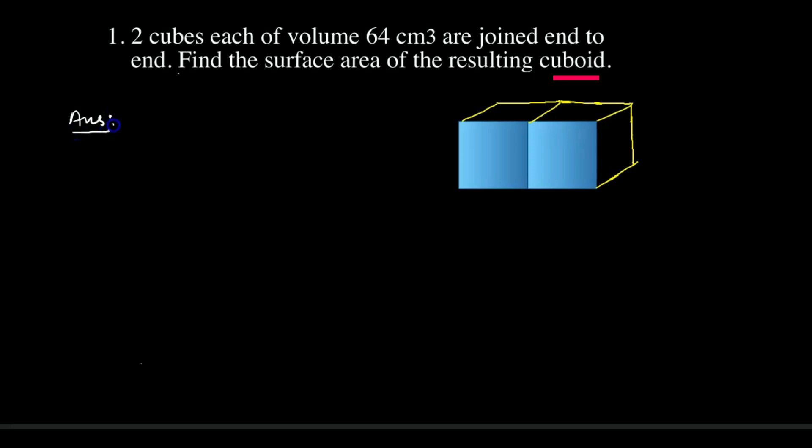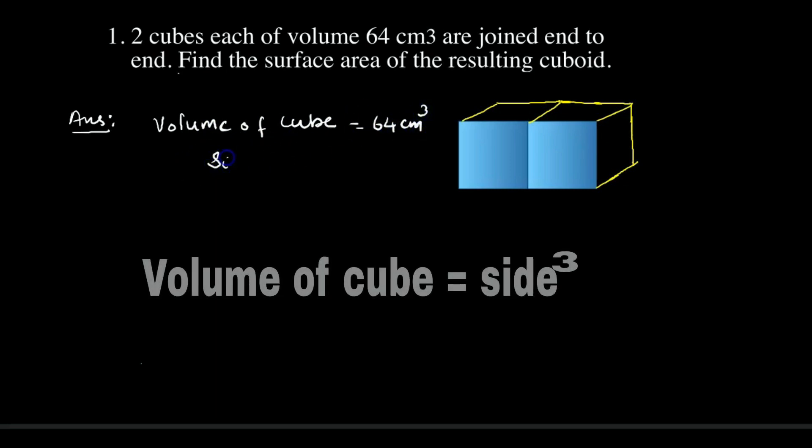Let's see how to solve it. Here, volume of cube is given as 64 cm³. So volume of cube equals 64 cm³. The volume of cube is side³, so let's write side³ equals 64.